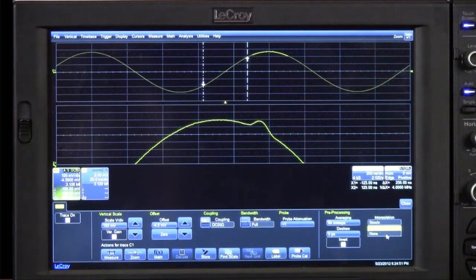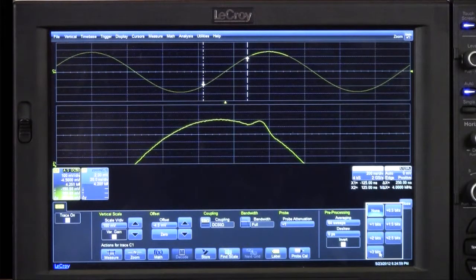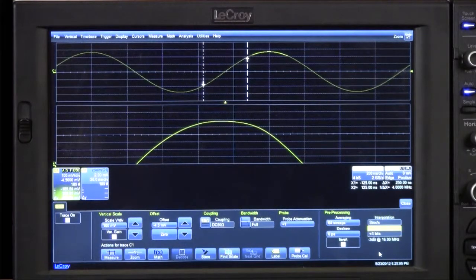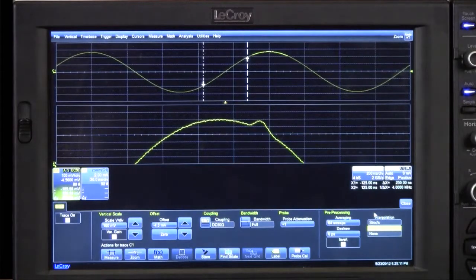LaCroix like Agilent also offers a high-res mode. Based on the limited sample rate of the HRO models of two gigasamples per second, turning on high-res mode doesn't always help because it has such severe bandwidth reduction. In this case, you can see turning on high-res mode eliminates your ability to see the small signal fluctuation.